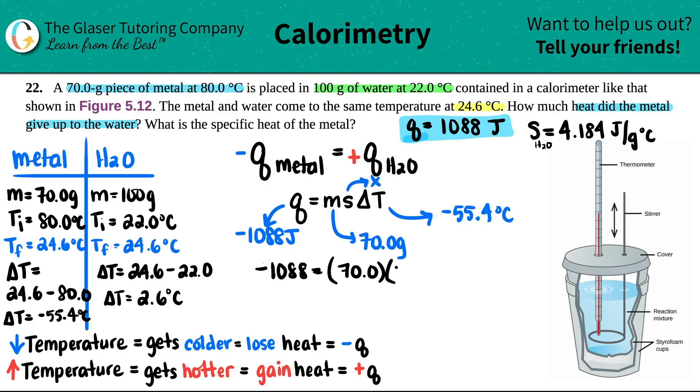All right, so let's see. Negative 1088 equals 70 times, maybe I'll just leave it as s, or I said it was x, so there you go, negative 55.4. And then this is just algebra, solve for x. So 70 times negative 55.4, I get negative 3878. And this was x, so this is x. Get x by itself, divide by negative 3878, and then we will arrive at our number.